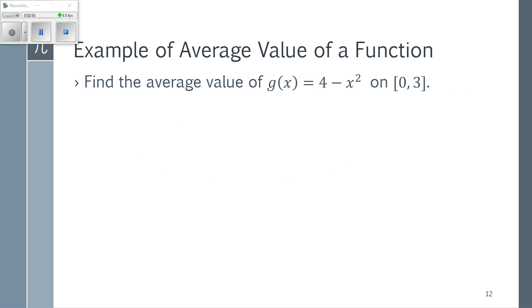My average value of g is going to be, I need to add all of the function values up, so I need the integral from 0 to 3 of g of x. But then divide by how many there are, which in this case is going to be the 3 minus 0.